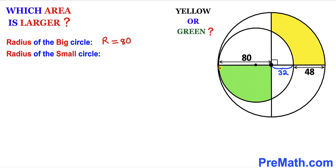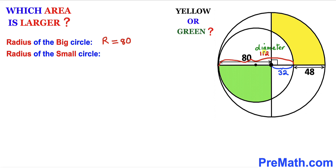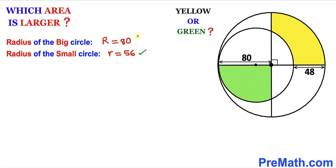We know this length is 80 and this length is 32, so the whole length is 80 plus 32, which gives us 112. We can see that 112 is the diameter of the smaller circle, so the radius of the smaller circle is half of that — which is 56. Let me represent the radius of the smaller circle as lowercase r, equal to 56 units. So the radius of the smaller circle is 56 and the radius of the larger circle is 80.